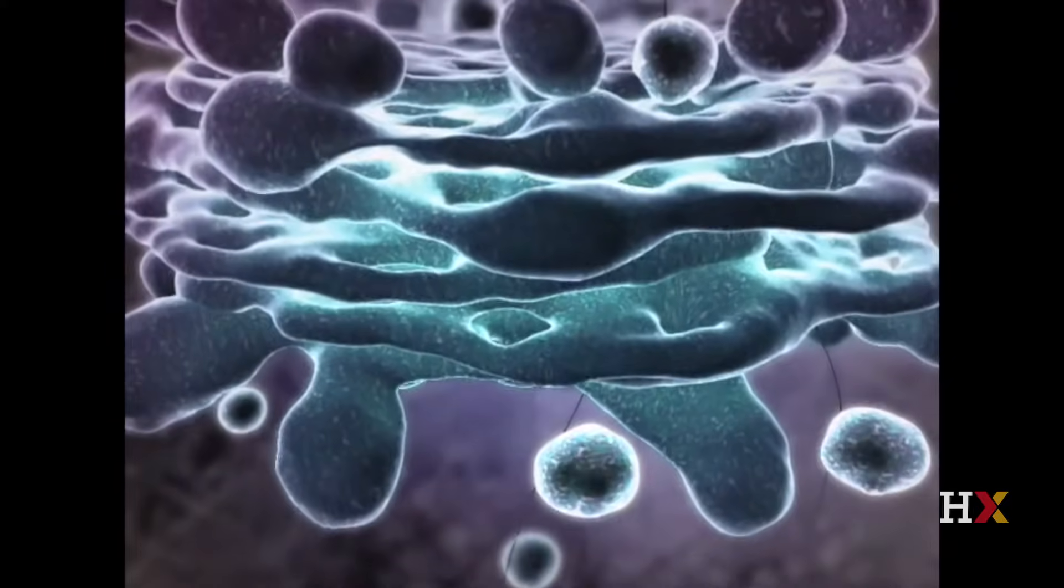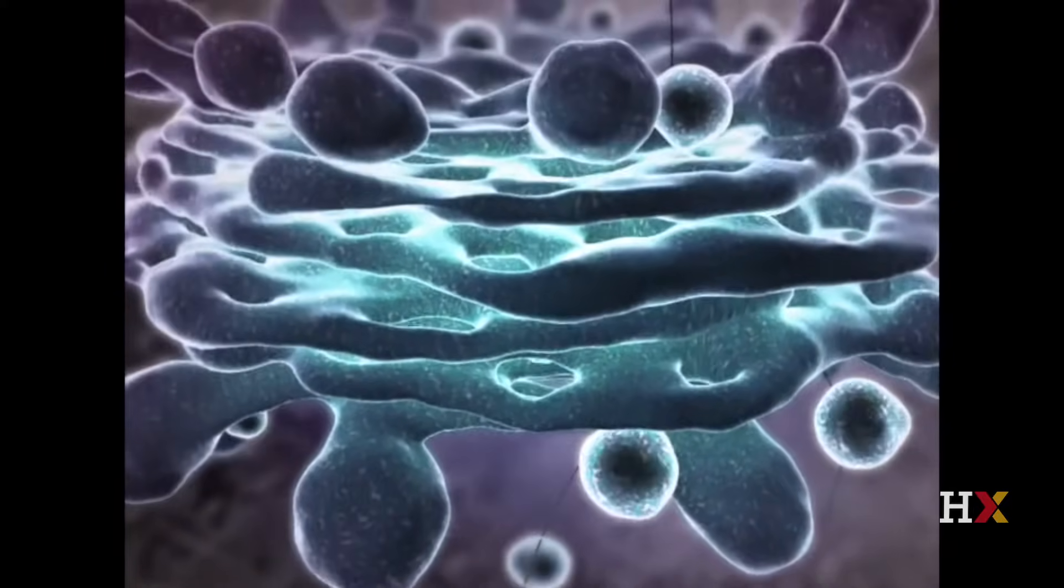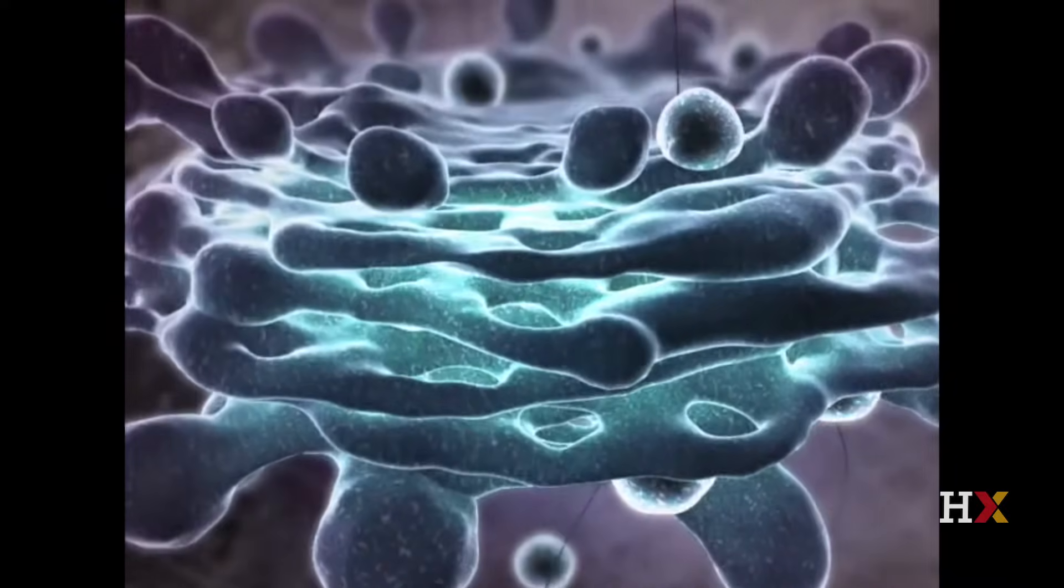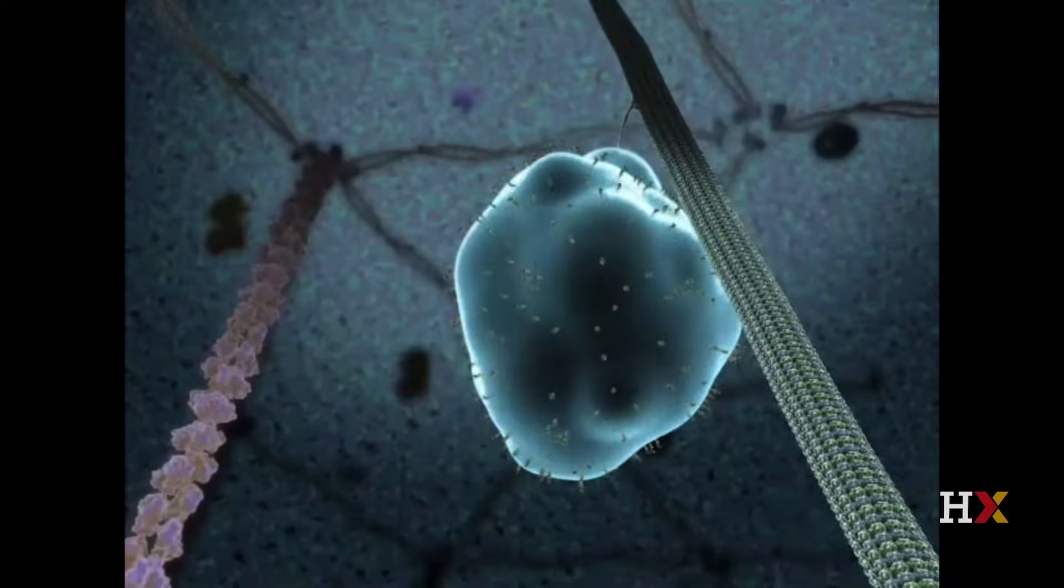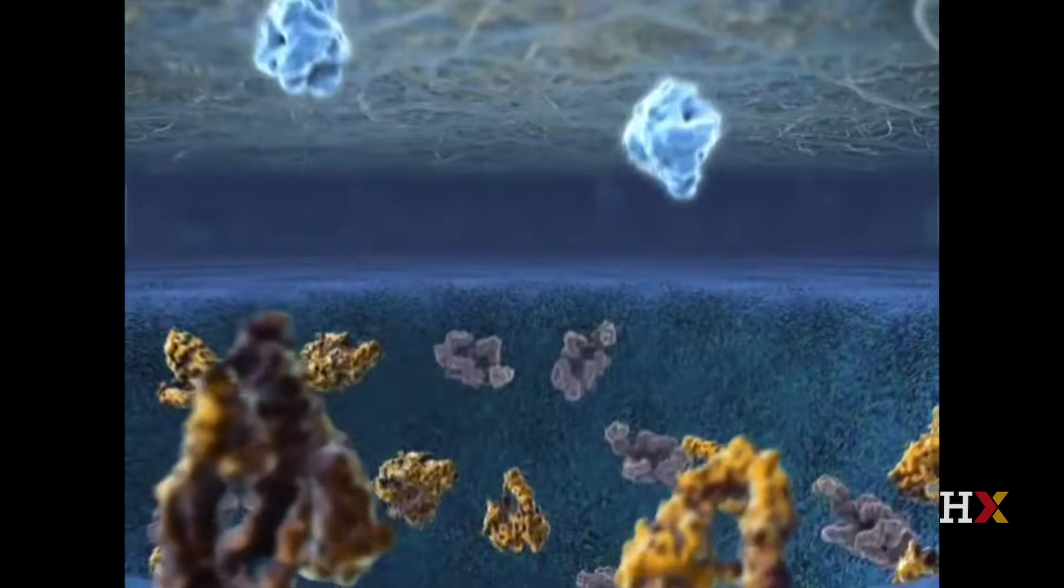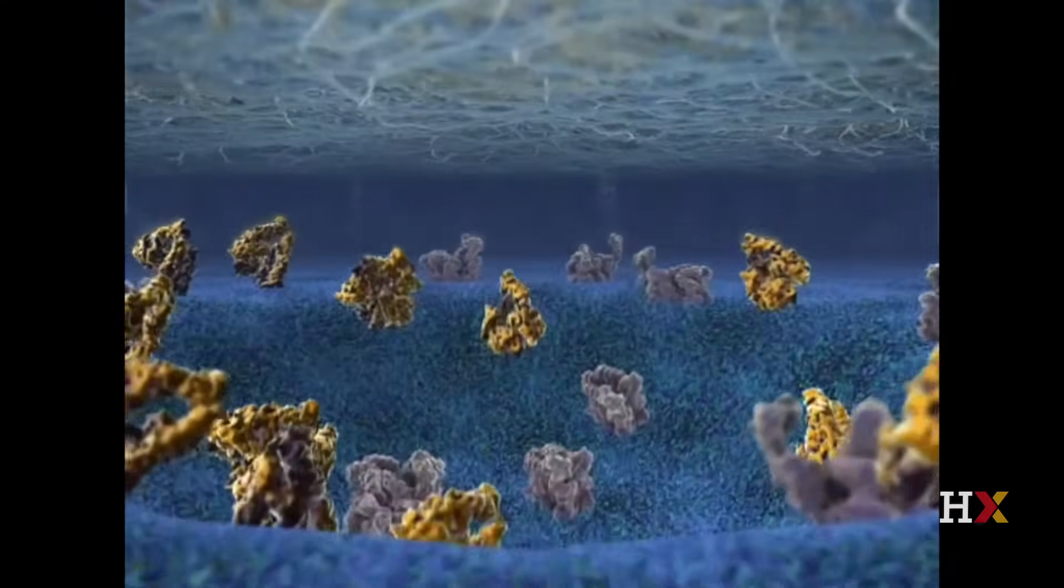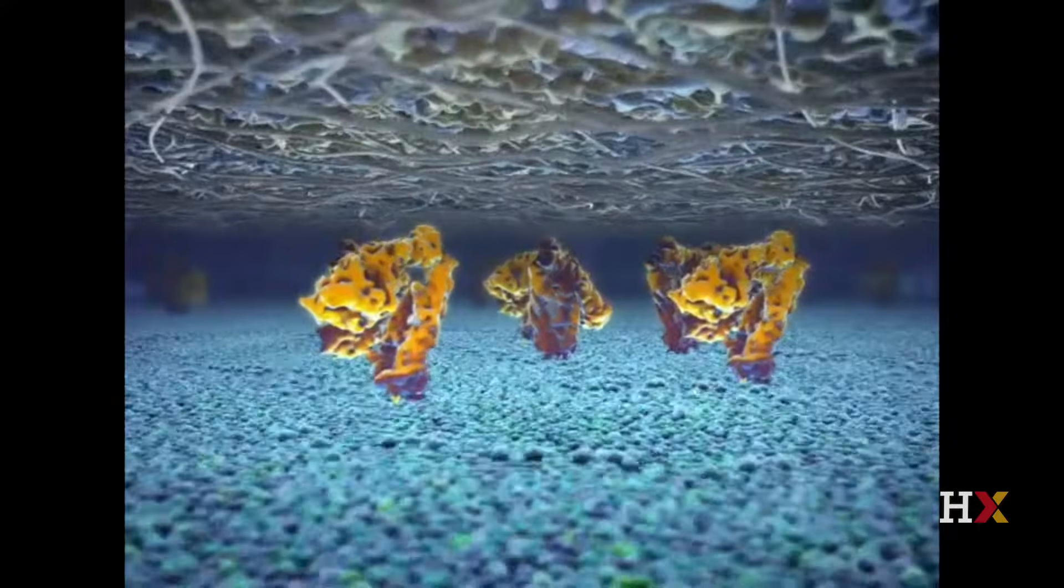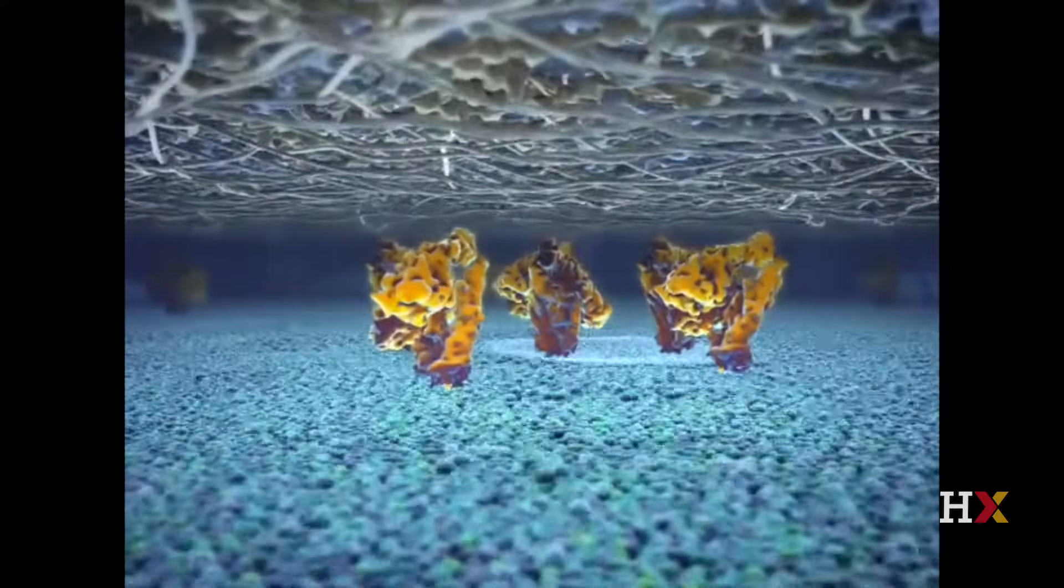So here we see the Golgi apparatus that's receiving vesicles and also releasing vesicles, some of which fuse with the plasma membrane and dump their cargo into the external environment and also release transmembrane proteins into the plasma membrane.